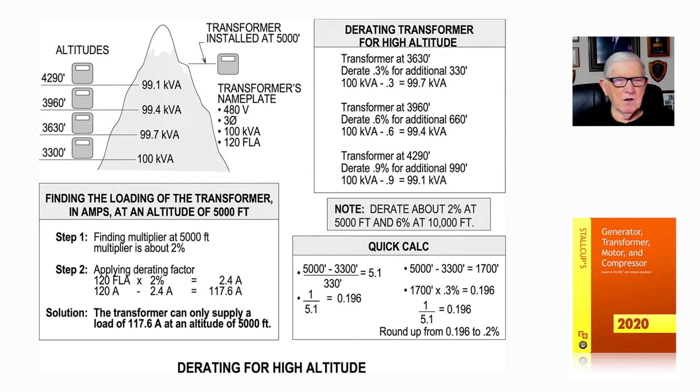Now to determine the amps reduction on this transformer: Step 1, at 5,000 feet, 2% of 120 FLA would be 2.4 amps. 120 amp output minus 2.4, you could load the transformer to 117.6 amps. That would be the loading in amps of the transformer at 5,000 feet. 117.6 amps at 5,000 feet is the solution, and that's what Figure 7-13 is illustrating.